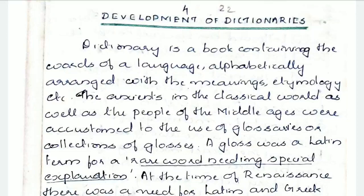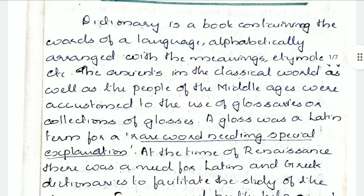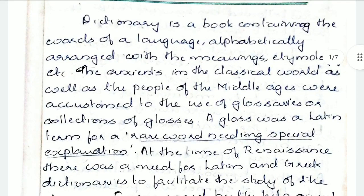Dictionary is a book containing the words of a language, and you can find them in alphabetical order. Meanings will be there, etymology, and sometimes examples will be given. In a more extensive dictionary you might find its noun usage, adjective usage, etc.